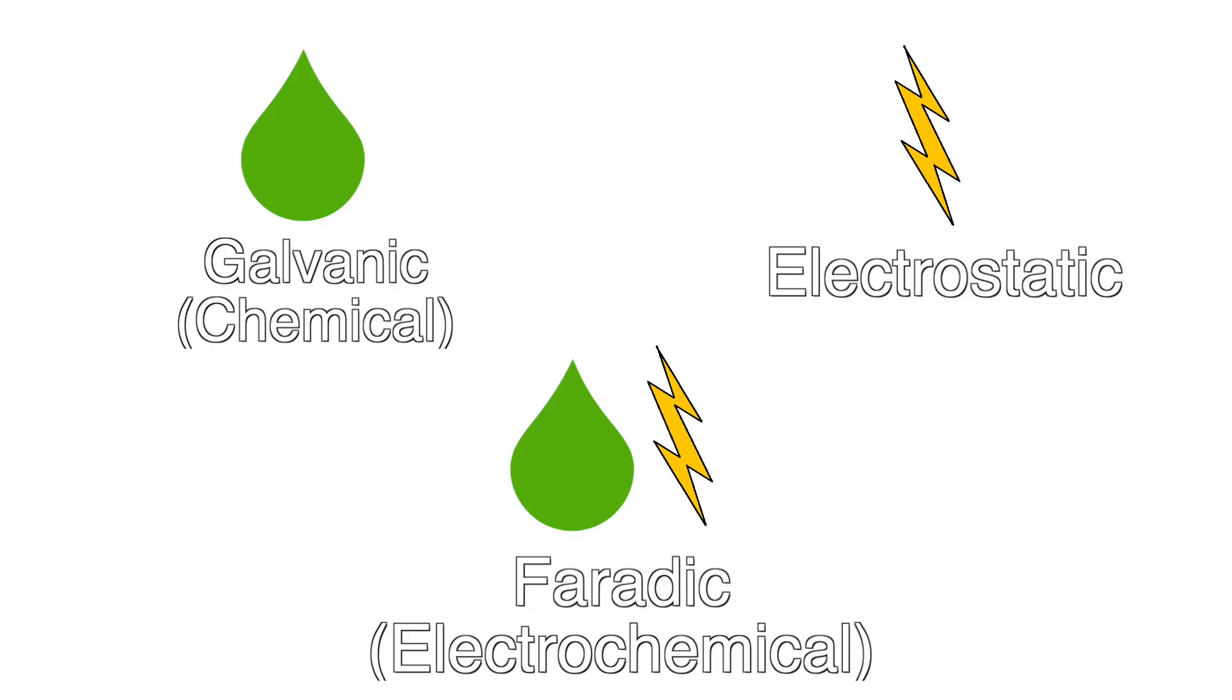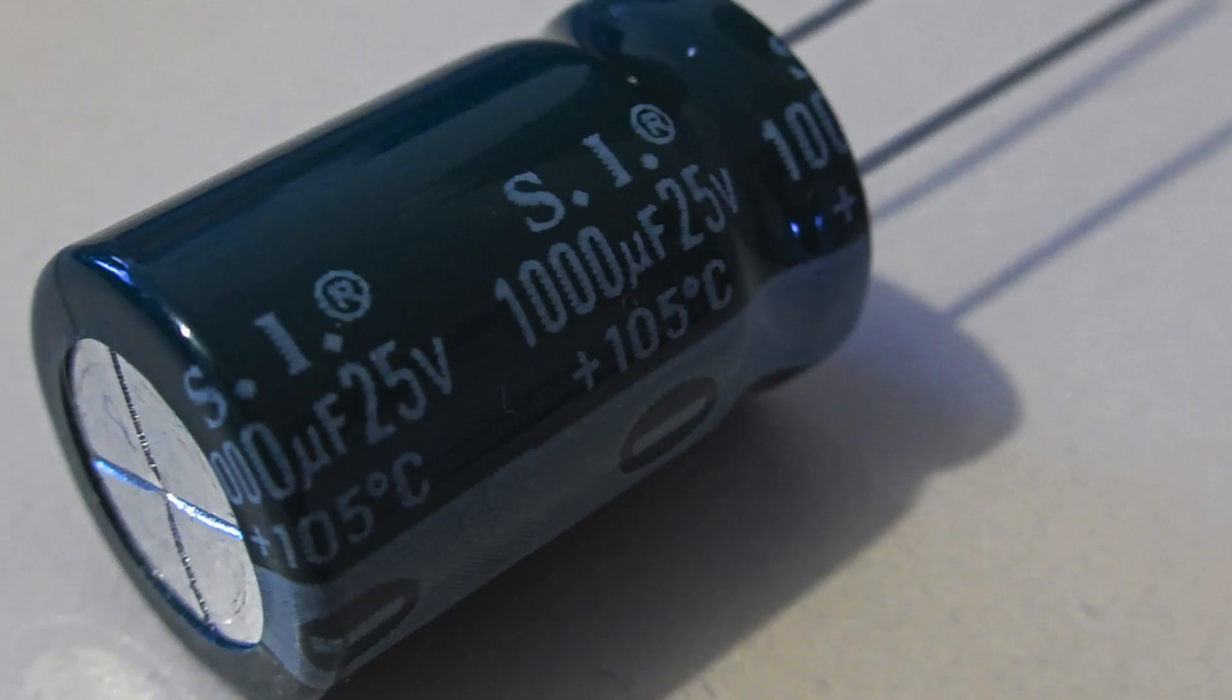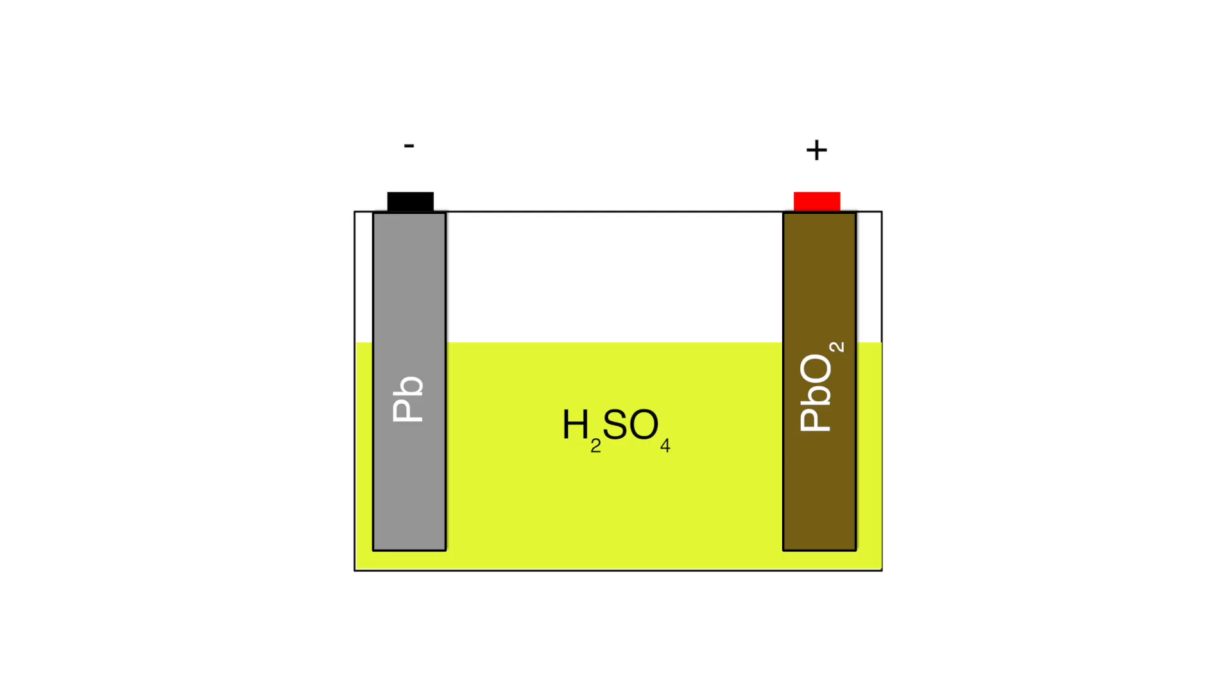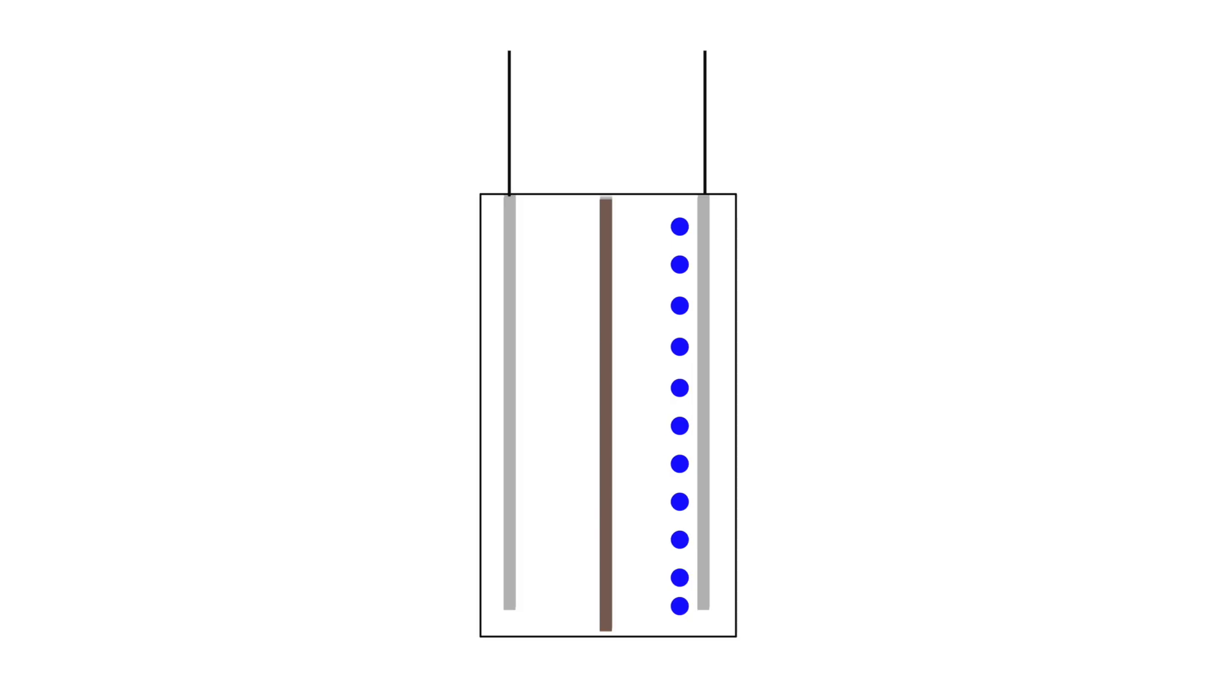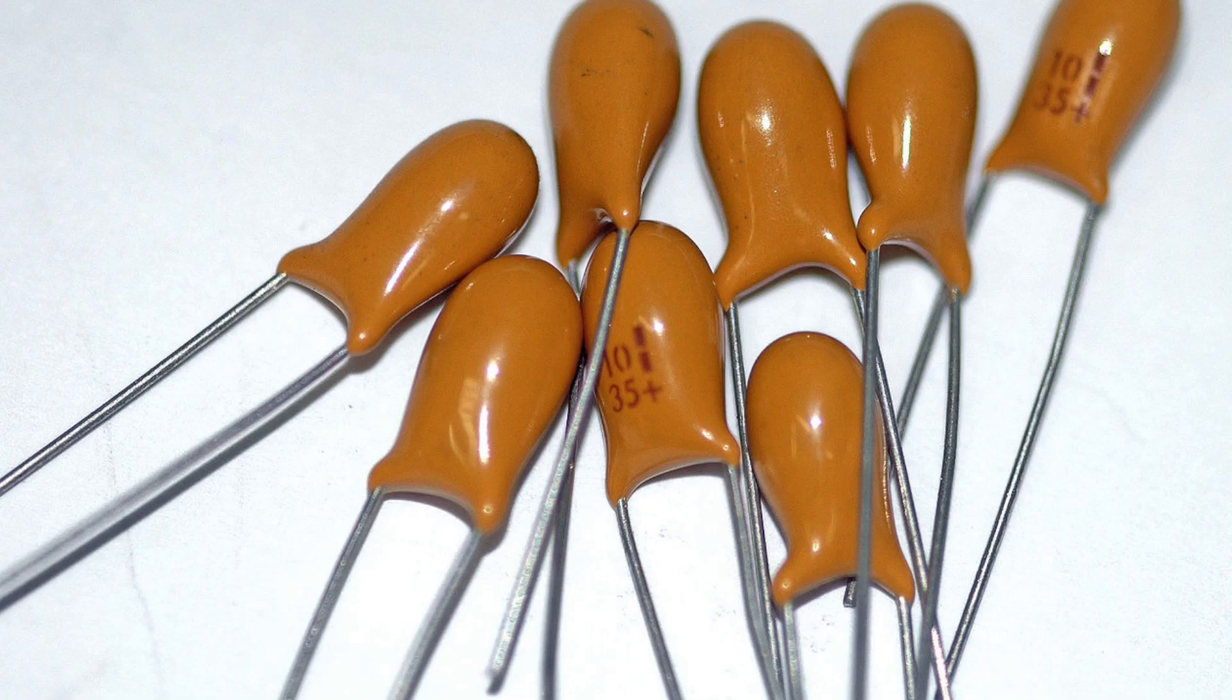The final method of energy storage is called electrostatic. This is the type that you most often find in capacitors. Instead of reactions with the electrodes where things are converted chemically, power is stored by moving ions from one electrode to the other and having them cluster near the electrode's surface. Technically, you don't even need an electrolyte for this to happen, and many types of capacitors are totally dry.